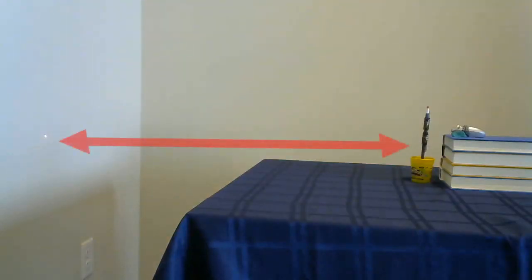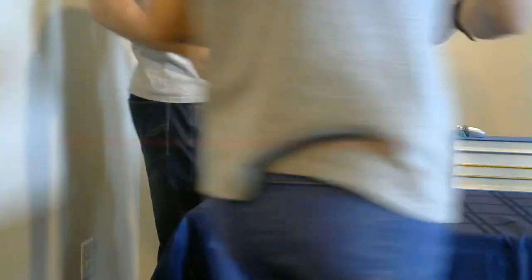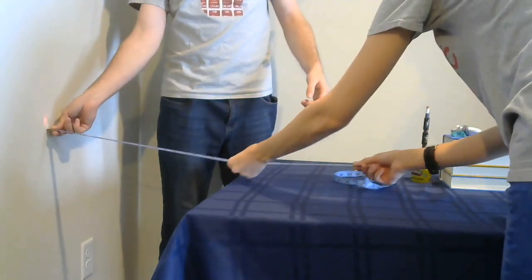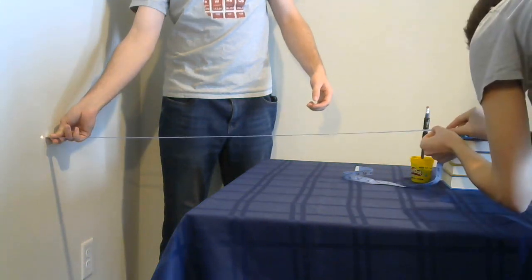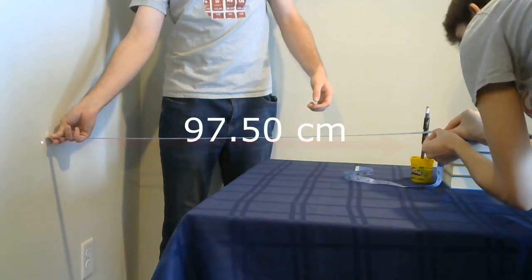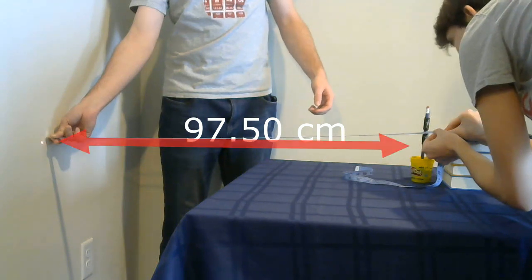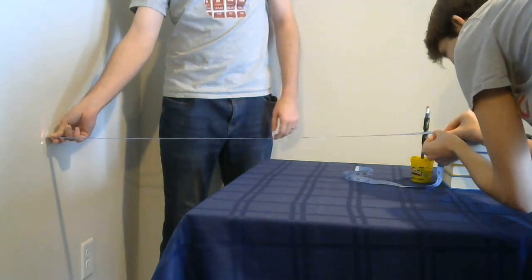There are two measurements we need to take to calculate the width of the hair. First, we need to know the distance between the hair and the wall. Let's measure this now. The distance between the hair and the wall in our experimental setup is 97.5 centimeters.